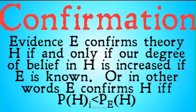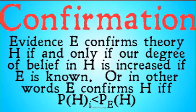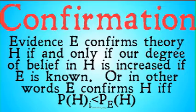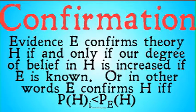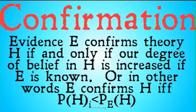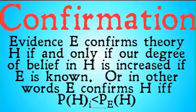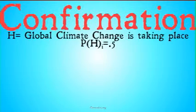For confirmation: evidence E confirms theory H if and only if our degree of belief in H is increased if E is known. In other words, E confirms H if and only if our initial probability of H is less than our final probability of H given E, conditional on E. Basically, if our degree of belief becomes higher when we gain evidence E, it would seem that E has in some way confirmed our belief that H. Let's take a look at a specific example.